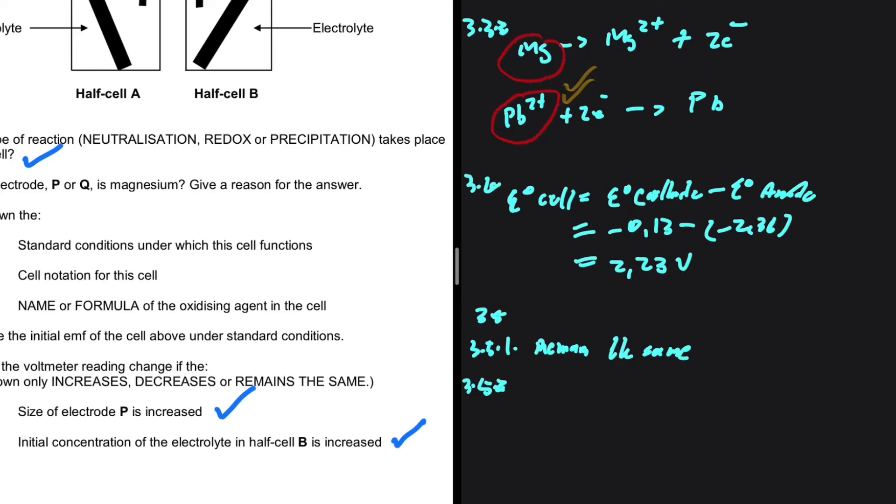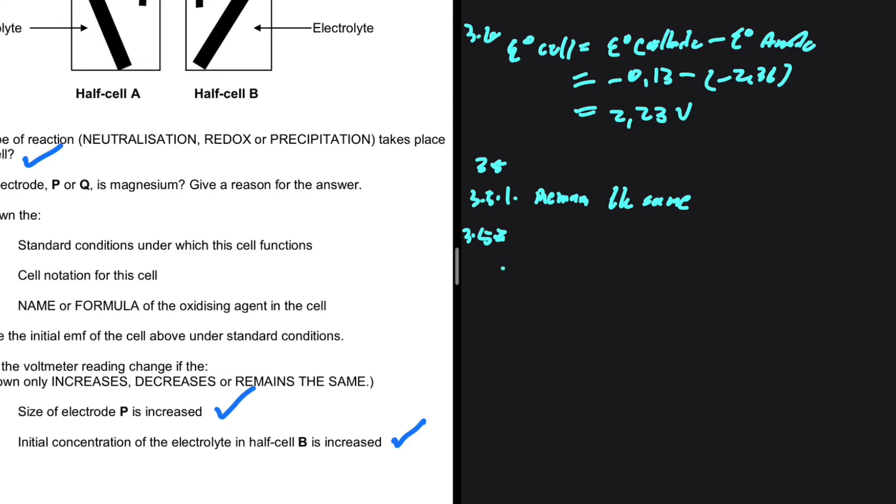So increasing the initial concentration of the electrolyte will increase the reduction potential of that species or of that electrode. So let's take a look at our equation.